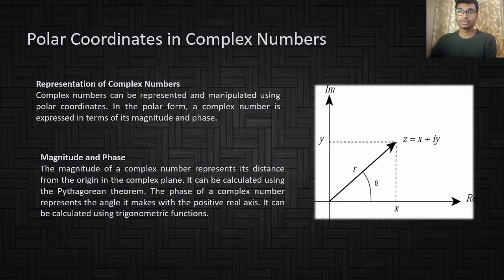Polar coordinates are also used in complex numbers to represent complex numbers. Complex numbers can be represented and manipulated using polar coordinates. In the polar form, a complex number is expressed in terms of its magnitude and phase.